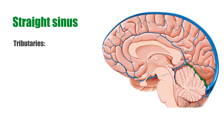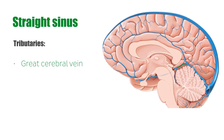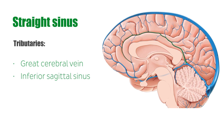The straight sinus receives venous blood mainly from the great cerebral vein, also known as the vein of Galen, highlighted in green here, as well as the inferior sagittal sinus, highlighted in green here. The superior cerebellar veins and veins from the occipital lobes also contribute.